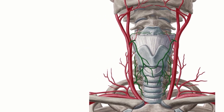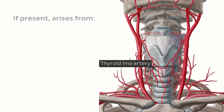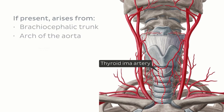About 10% of the population have an additional non-paired artery that supplies the thyroid gland called the thyroid ima artery. If present, this artery most often arises directly from the brachiocephalic trunk, but can occasionally come directly from the arch of the aorta or the right common carotid artery.